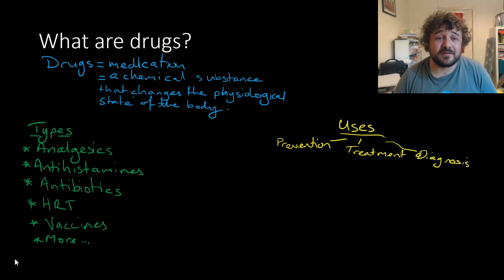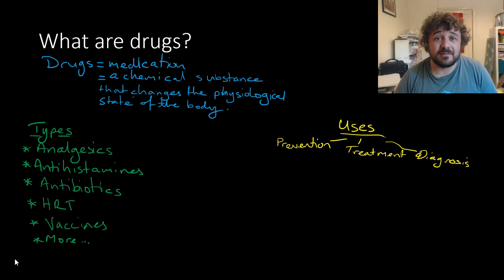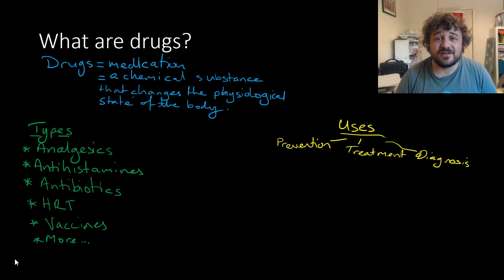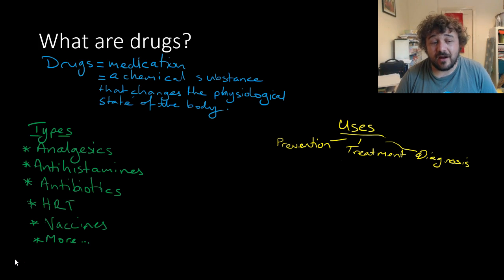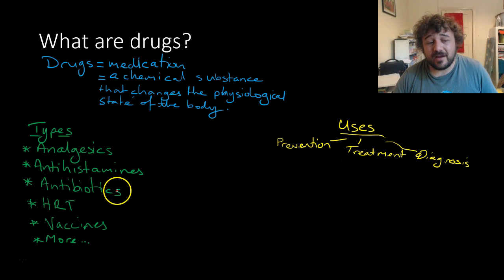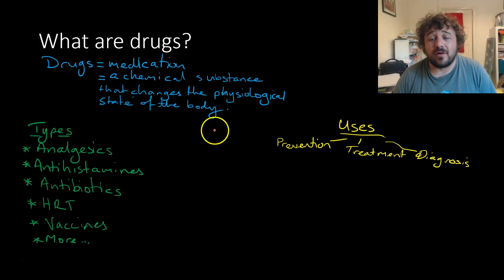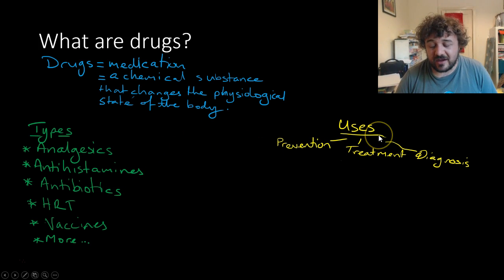So basically, what are drugs? Drugs are anything that's medication — we're going to use the word drugs, but medication equals drugs in this case. A drug is a chemical substance which changes the physiological state of the human body. There are different types: analgesics, antihistamines, antibiotics, hormone replacement therapy, vaccines, and more. They can be used for prevention, treatment, or diagnosis of different diseases and conditions.